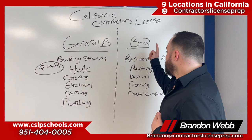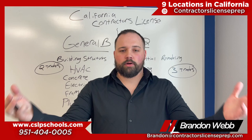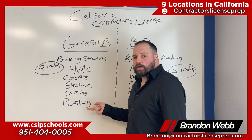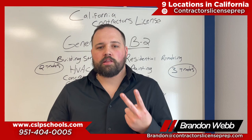We're going to go over the differences between a general B and a B2 residential remodeling license. To start off with the general B — the general B is a structural building trade. This means you can basically build an entire building as a general contractor. The trades involved include HVAC, concrete, electrical, framing, and plumbing. Imagine every trade that goes into building a whole structure — that's what you can perform as a general B.